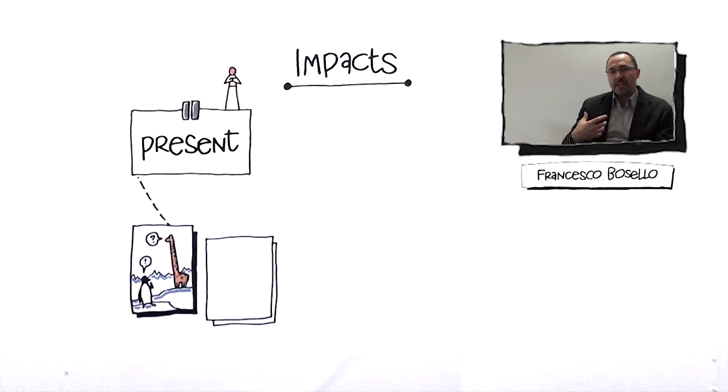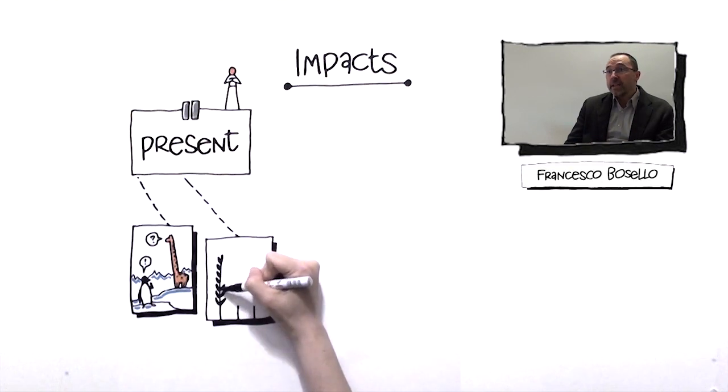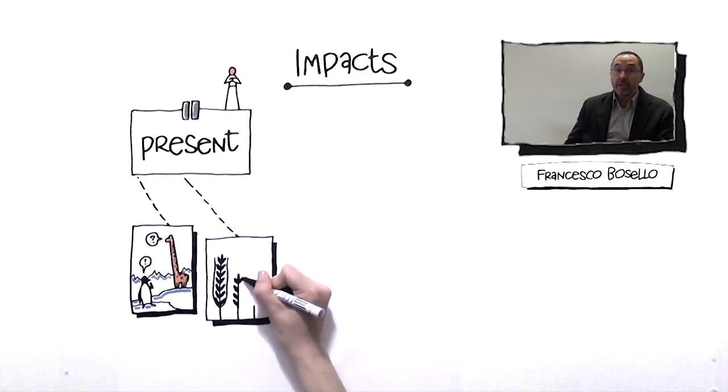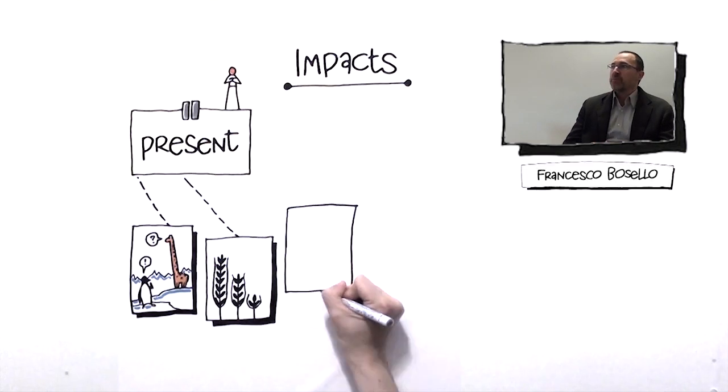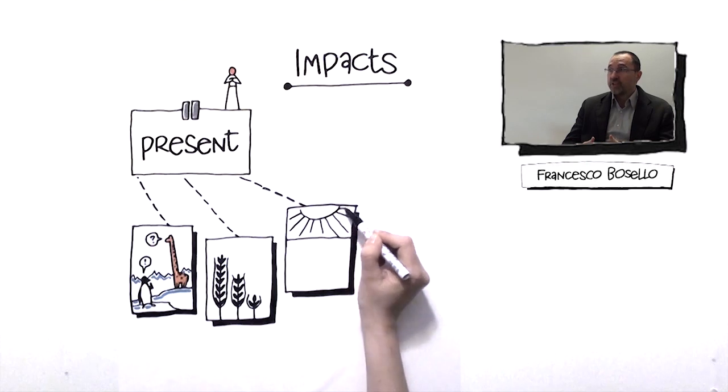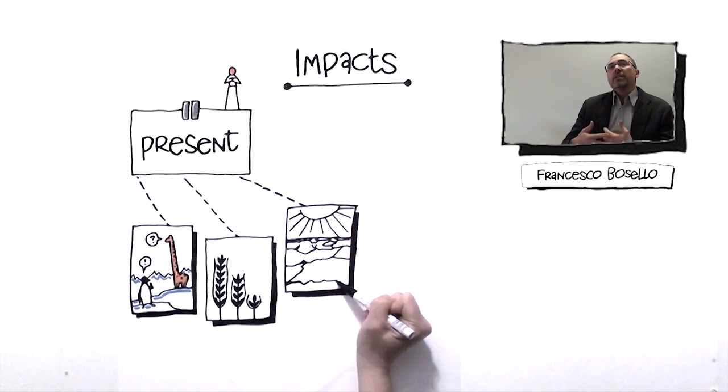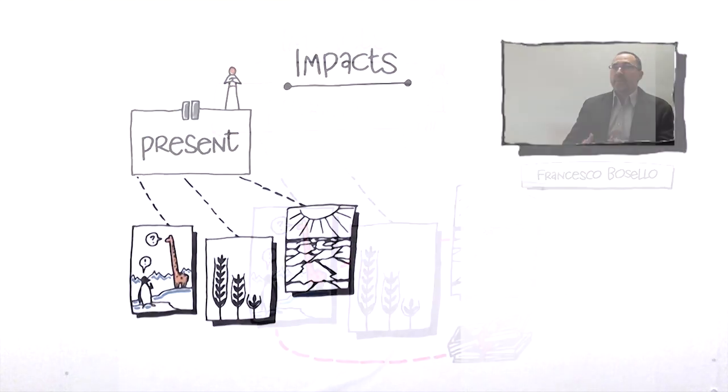For instance, wheat yields are declining in some areas of Asia and also of Europe. Also today, there are some phenomena of water scarcity which are clearly induced not by over-exploitation or bad exploitation of water resources, but because of water scarcity induced by climate change.